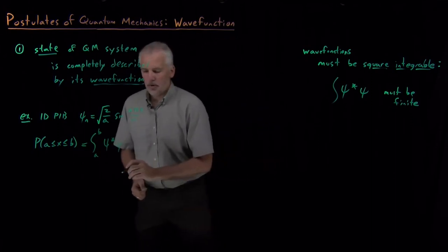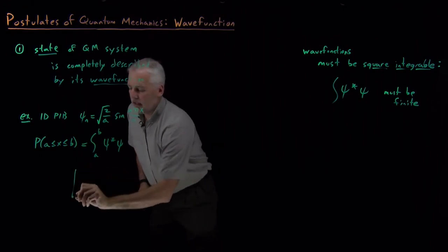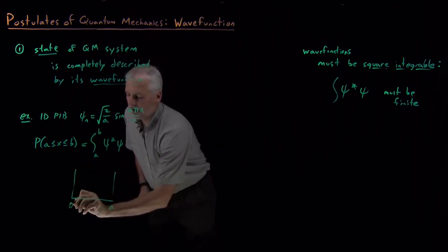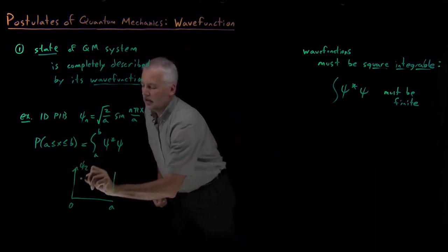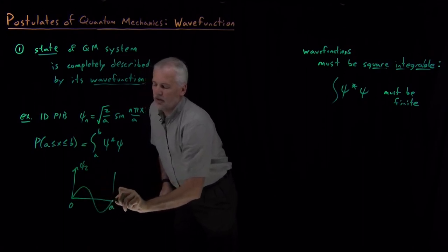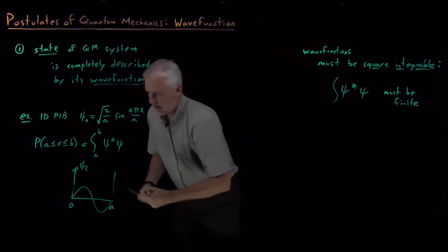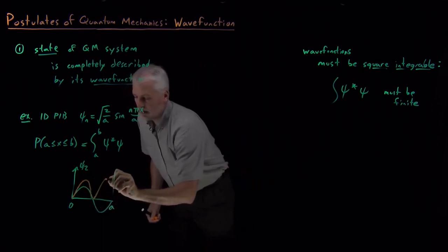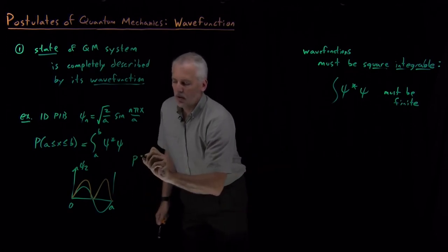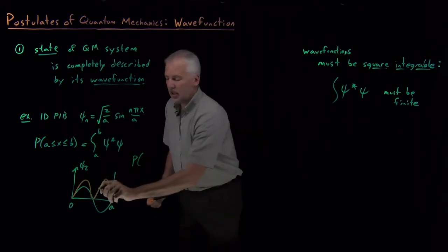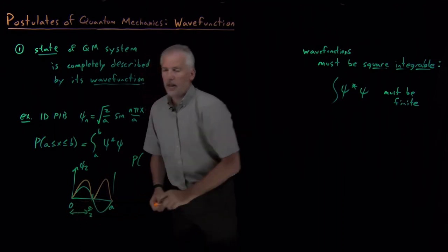For example, let's take a particle in a box from zero to a. Let's take the ψ₂ wave function. The wave function looks like that. The square of the wave function looks like that. If I ask, what's the probability that the molecule is in the left half of the box, in the range between zero and a over two?